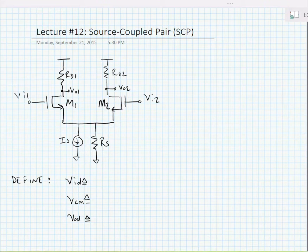Here we have a source coupled pair drawn that consists of M1 and M2, and their sources are connected together and fed by a current source IS. We presume that this current source is a non-ideal current source, which means that its output resistance RS here does not necessarily equal infinity.